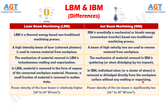Number 5. In laser beam machining, power density of the laser beam is relatively higher, which is around 10 to the power of 4 to 10 to the power of 6 watts per square millimeter, whereas power density of the ion beam is significantly less, around 10⁻² to 10 watts per square millimeter.